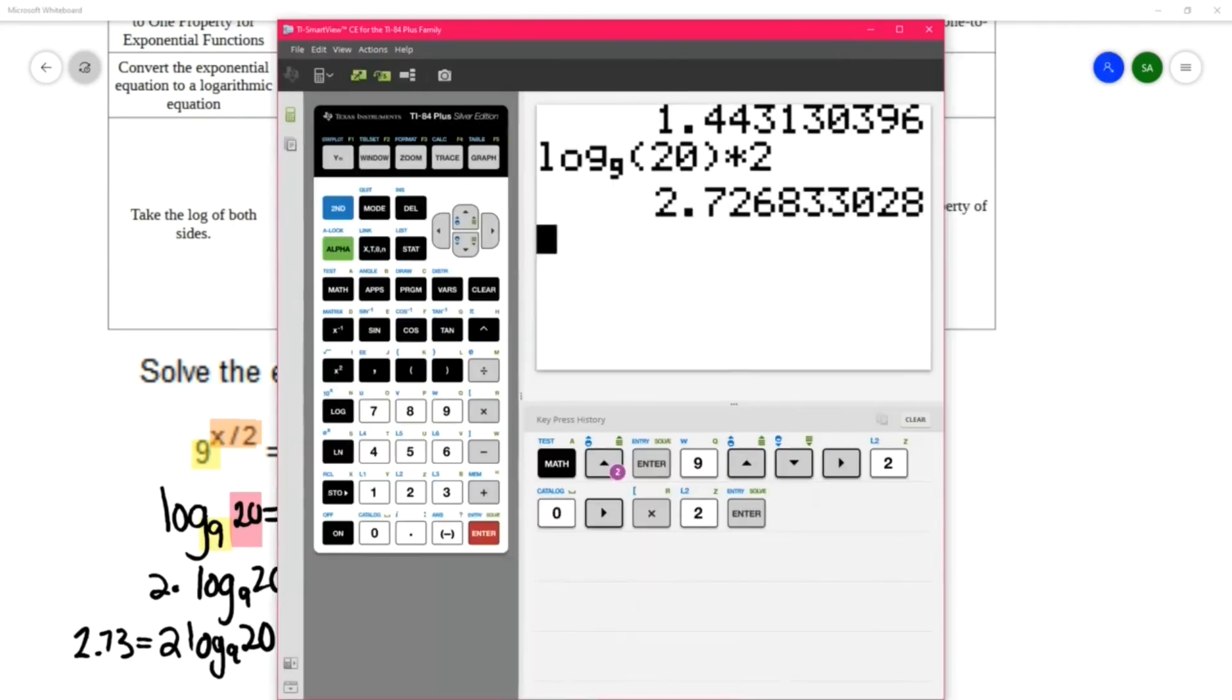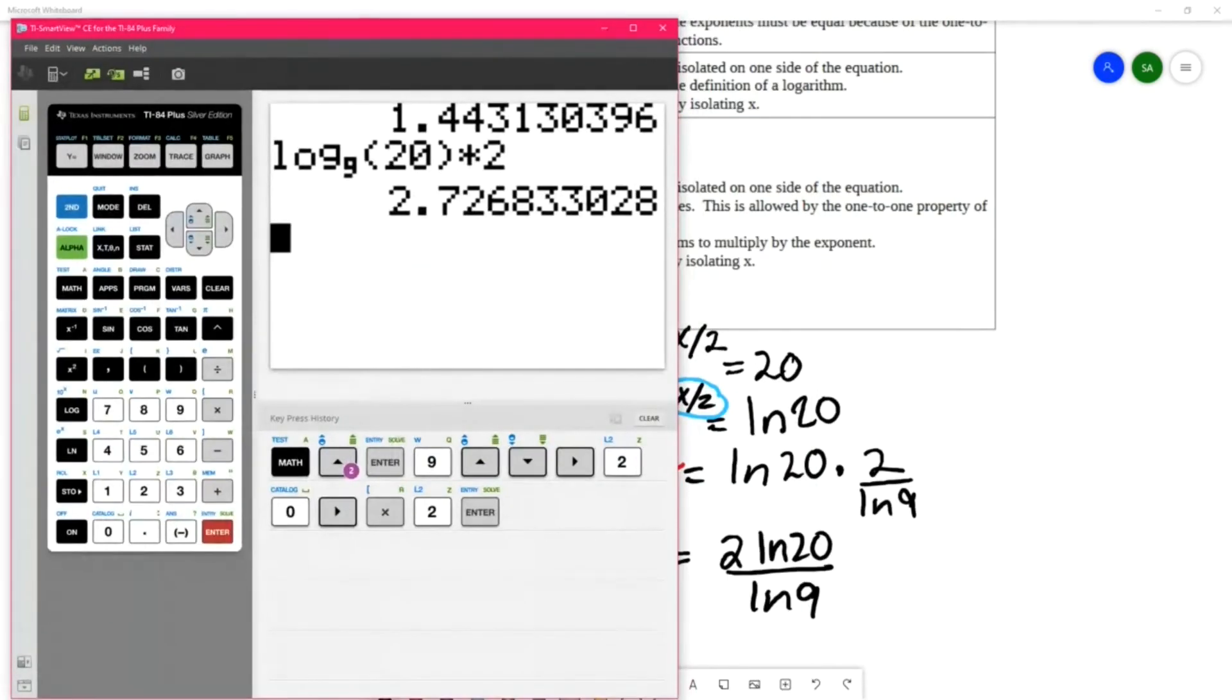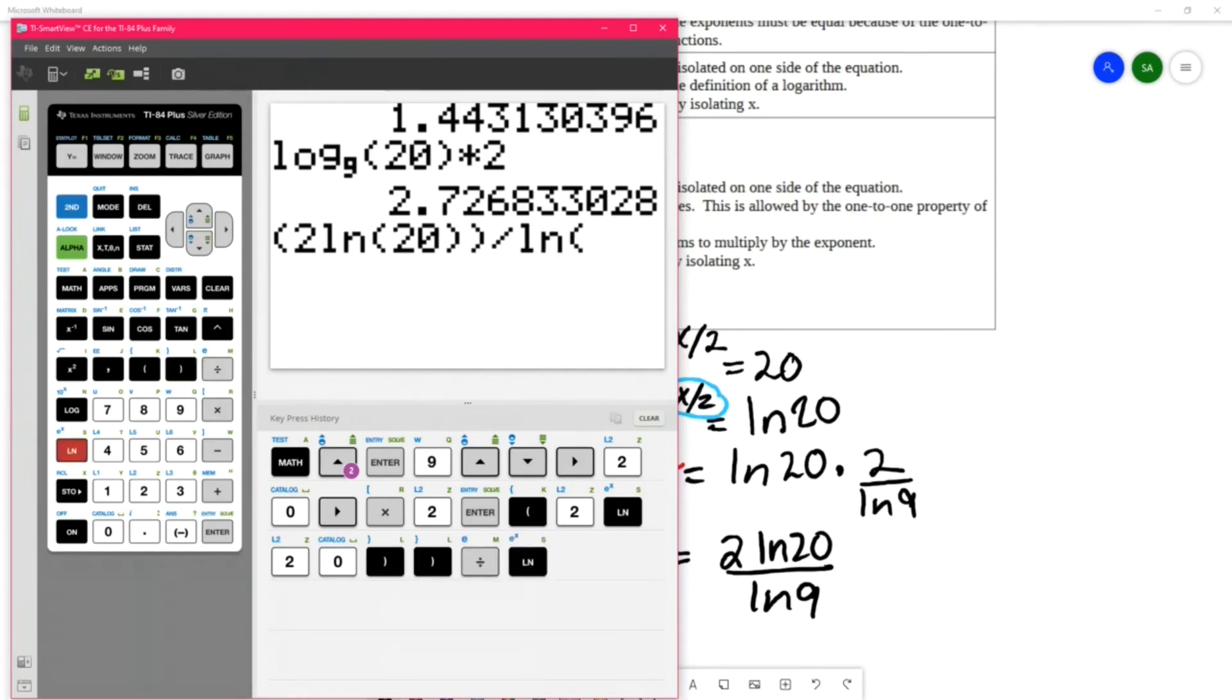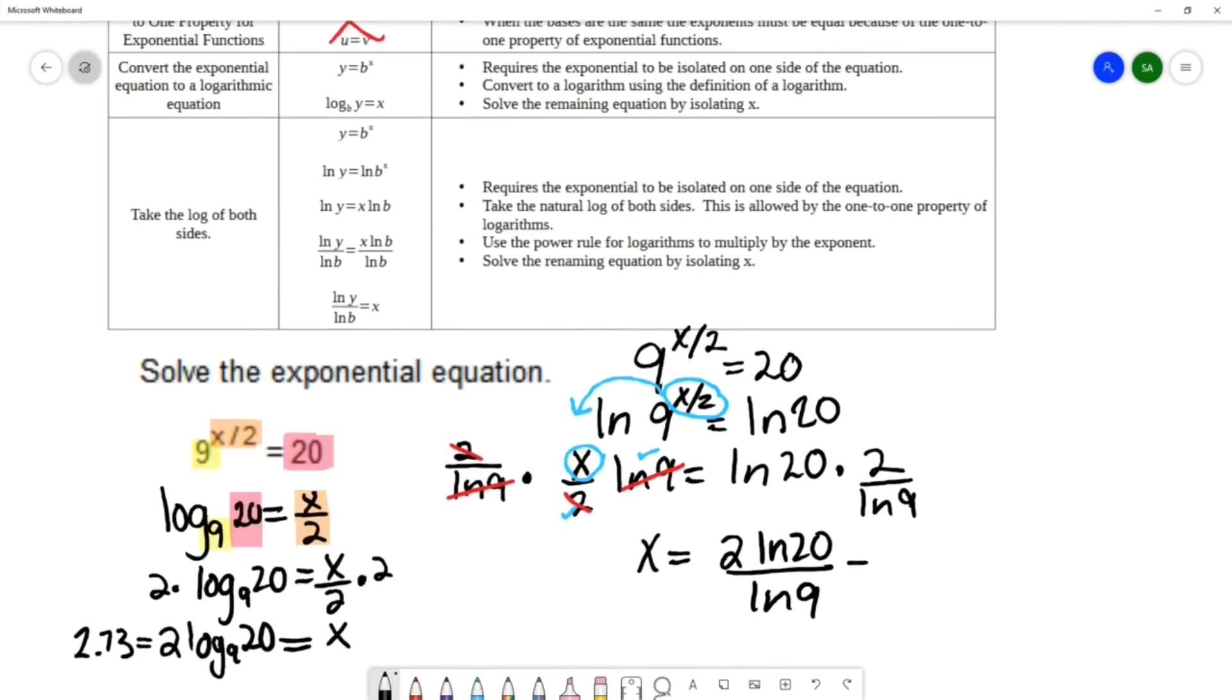And then let's type in our other log. We're going to put parentheses around our numerator—2 natural log of 20, close parenthesis for the log, close parenthesis for the numerator. And then we're going to divide by natural log of 9 and close parenthesis for the log. And we get approximately 2.73, just like the other one.